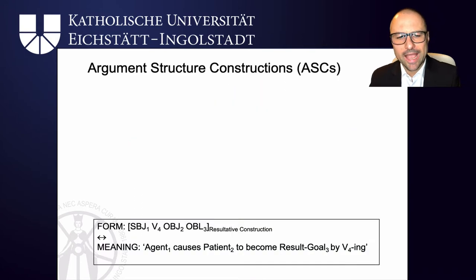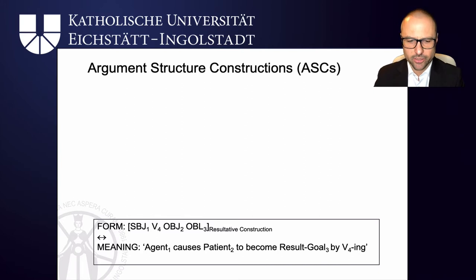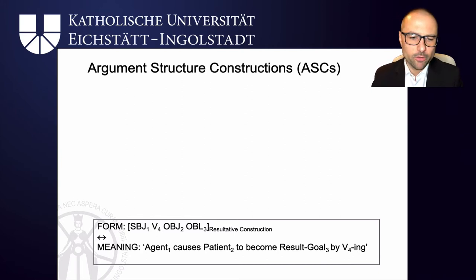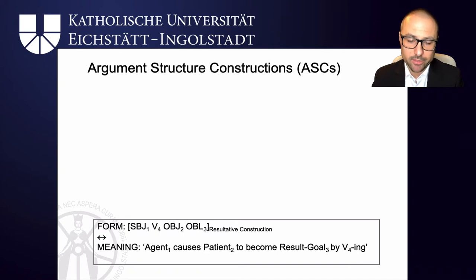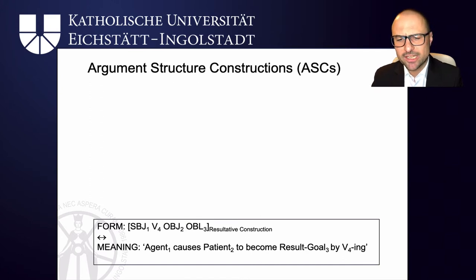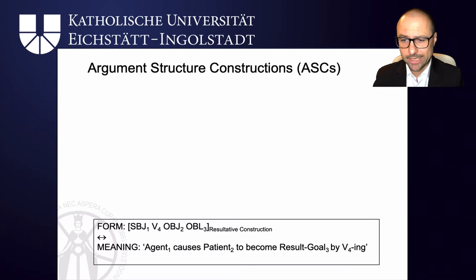Here we have an abstract argument structure construction — the resultative construction — which has a subject slot, a verb slot, a slot for an object, and an oblique. The meaning is that the subject (subscript 1) is the agent that causes a patient to become the result-goal specified by the oblique slot. The verbal slot then details which particular verbal frame you activate for this resultative meaning.